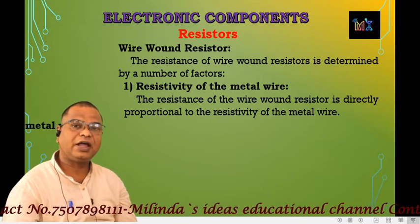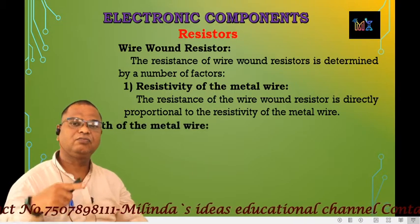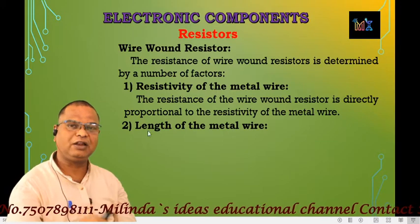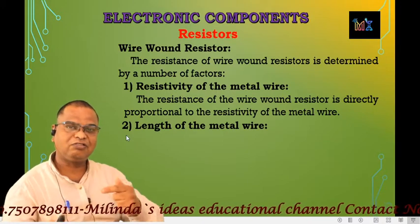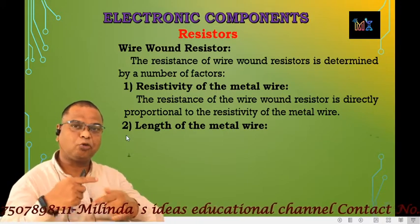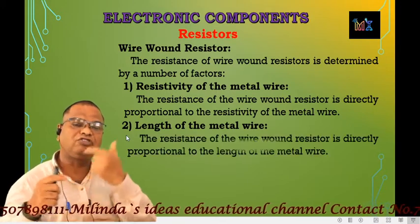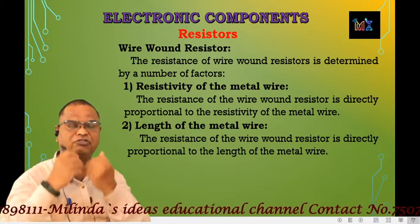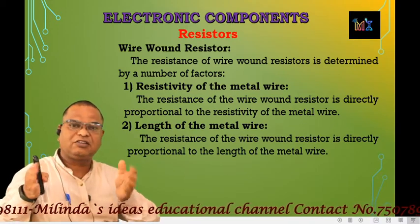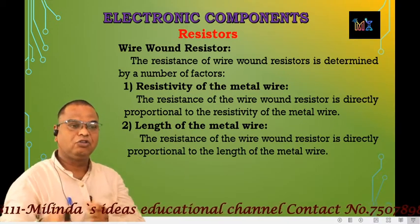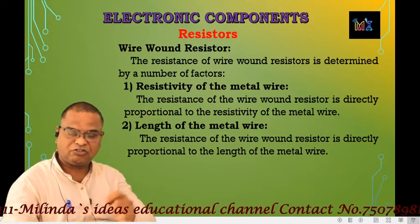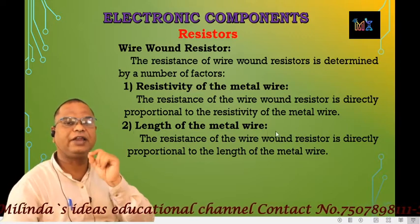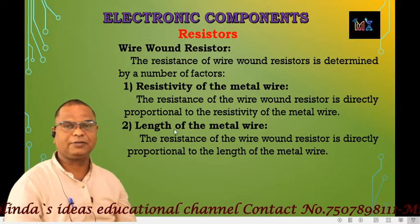The second factor is the length of the wire. From the formula R equals rho L upon A, resistance is directly proportional to the length L. So the resistance of the wire is directly proportional to the length of the resistivity wire.